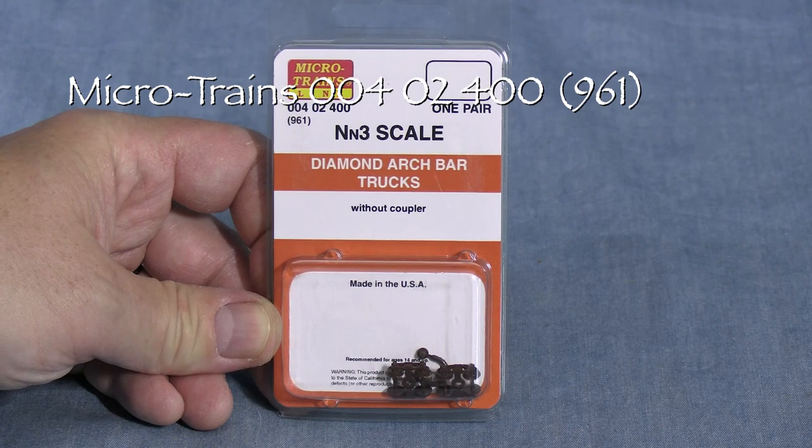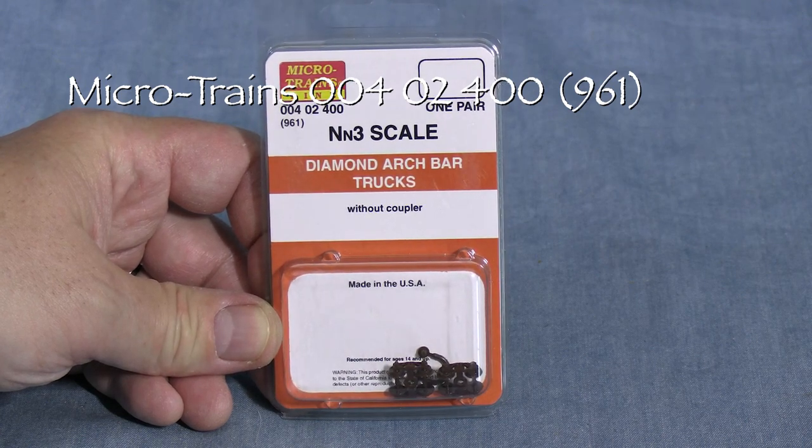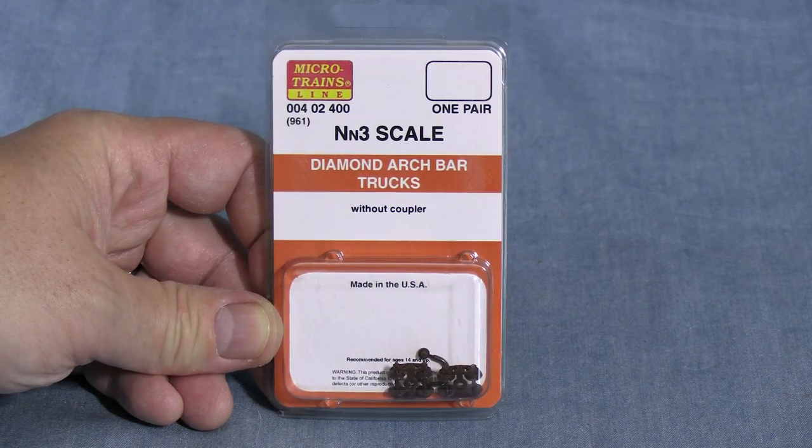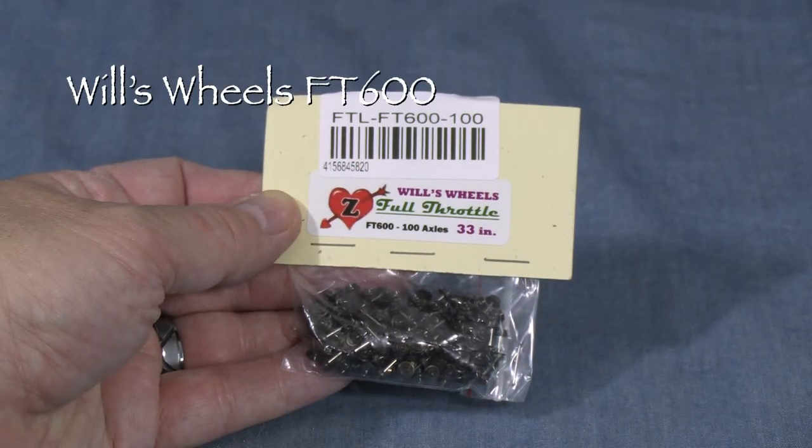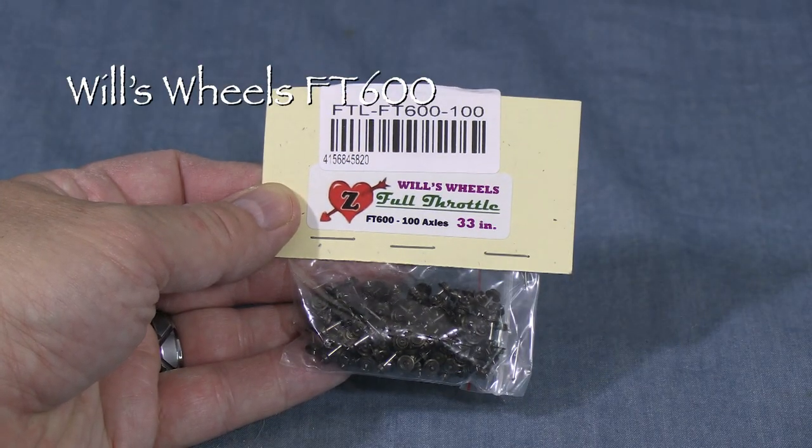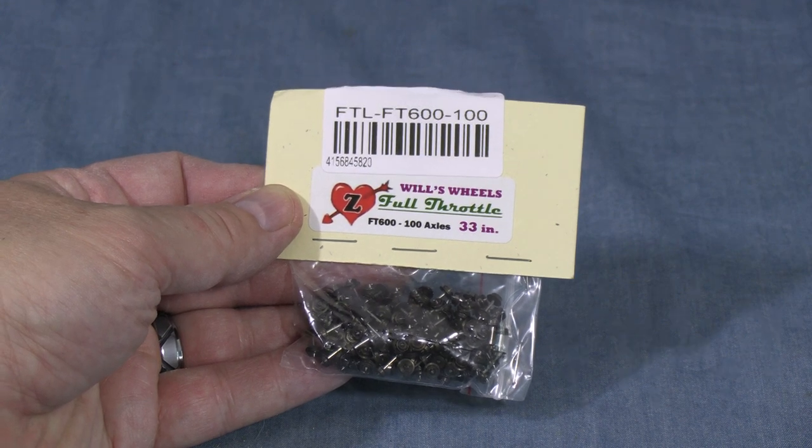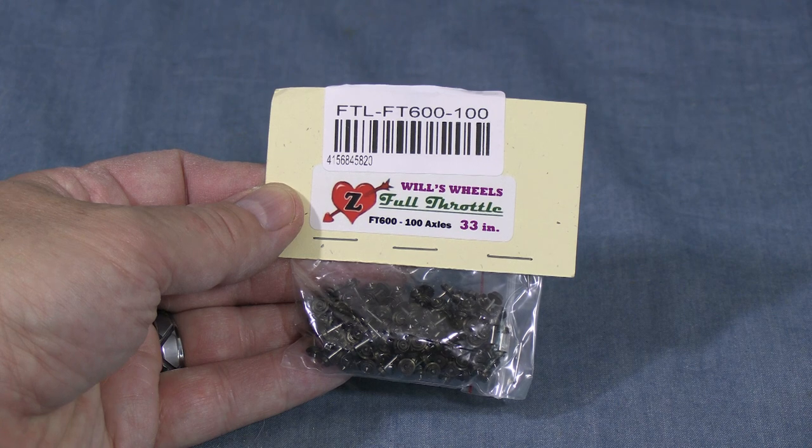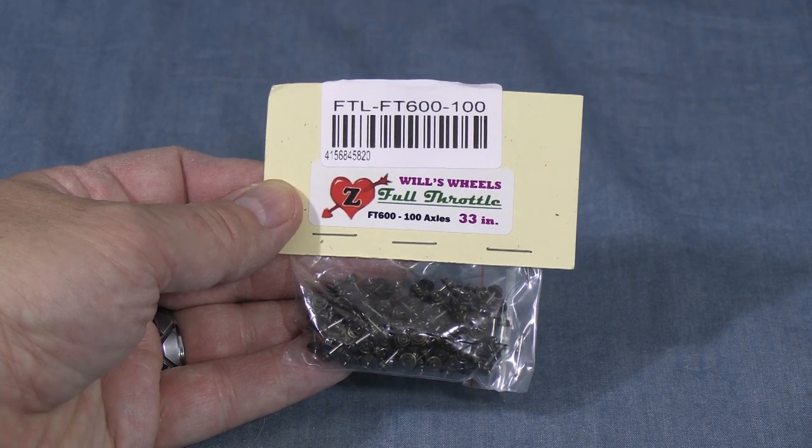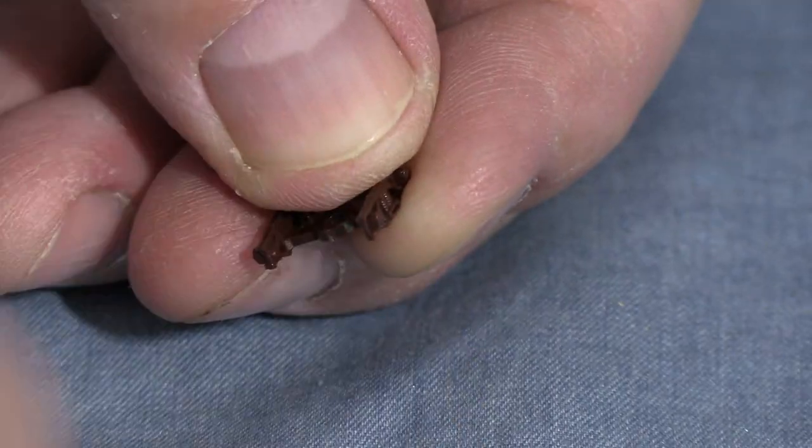I'll be using a pair of Microtrains Archbar trucks for the tender. These look fairly close to what's on my large-scale model, though at this size it's hard to make out the detail anyway. If I'm going to use the tender for electrical pickup, I'll need to swap the plastic Microtrains wheels for metal ones. I prefer metal wheels anyway. Most recently, I found these from Will's Wheels. I've used them on all my NN3 rolling stock. To swap them out, first I'll remove the plastic wheels. Then I'll insert the metal ones.